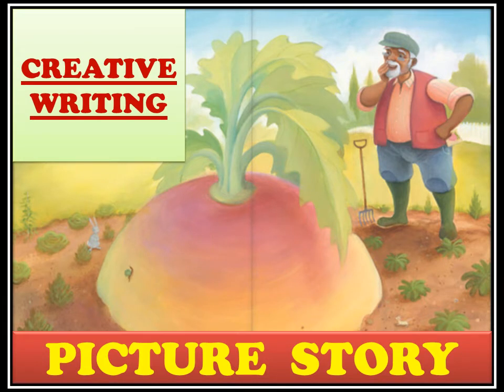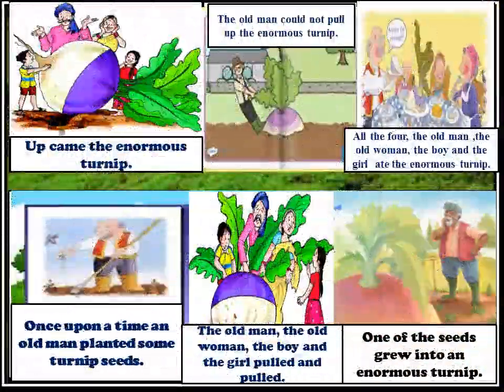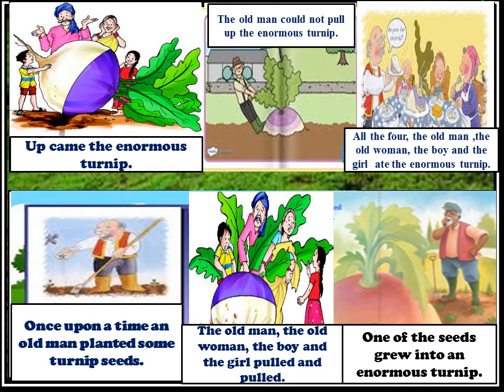Creative Writing — Picture Story. This is based on pictures. Pictures are given in improper sequence, and you have to make them in proper sequence, and then you have to make one story. So dear children, you can see here, you have been given six pictures and all the pictures are in improper sequence.